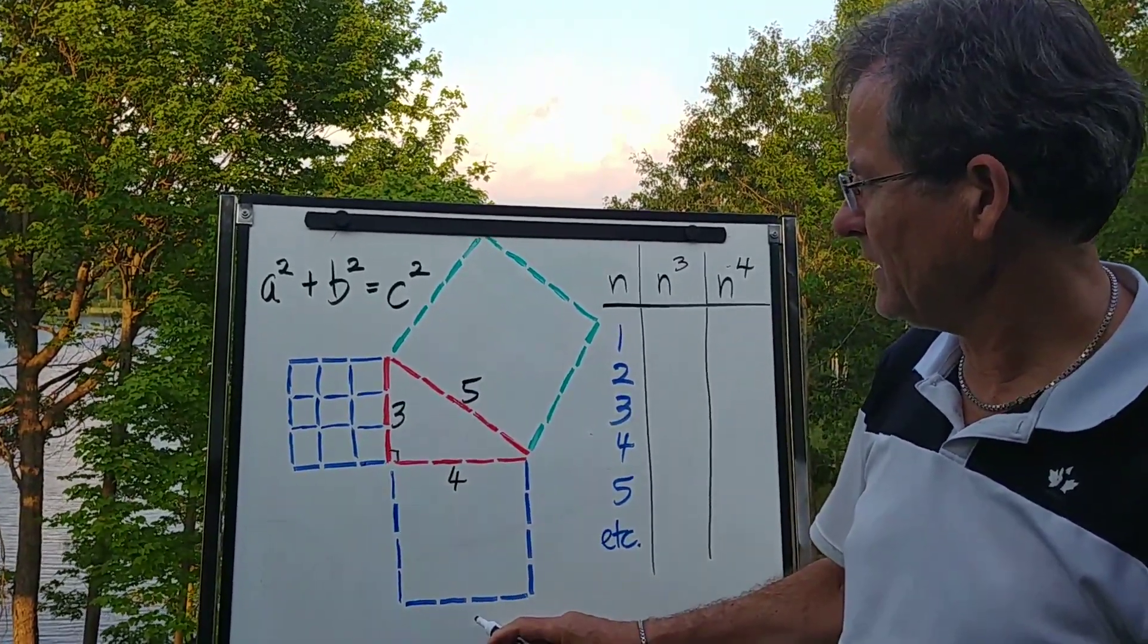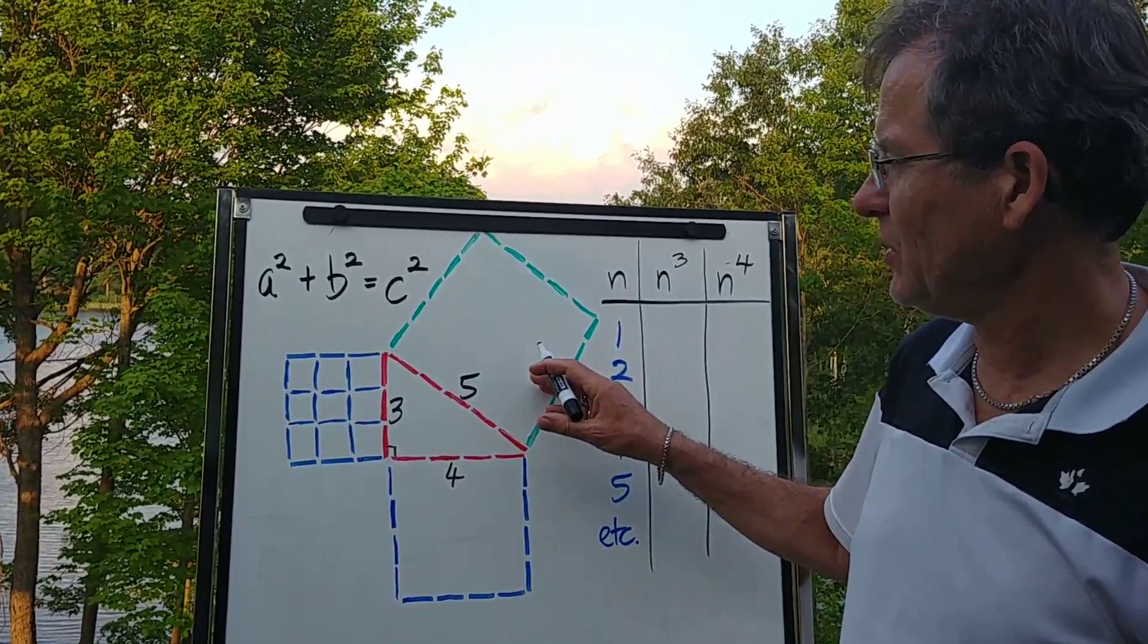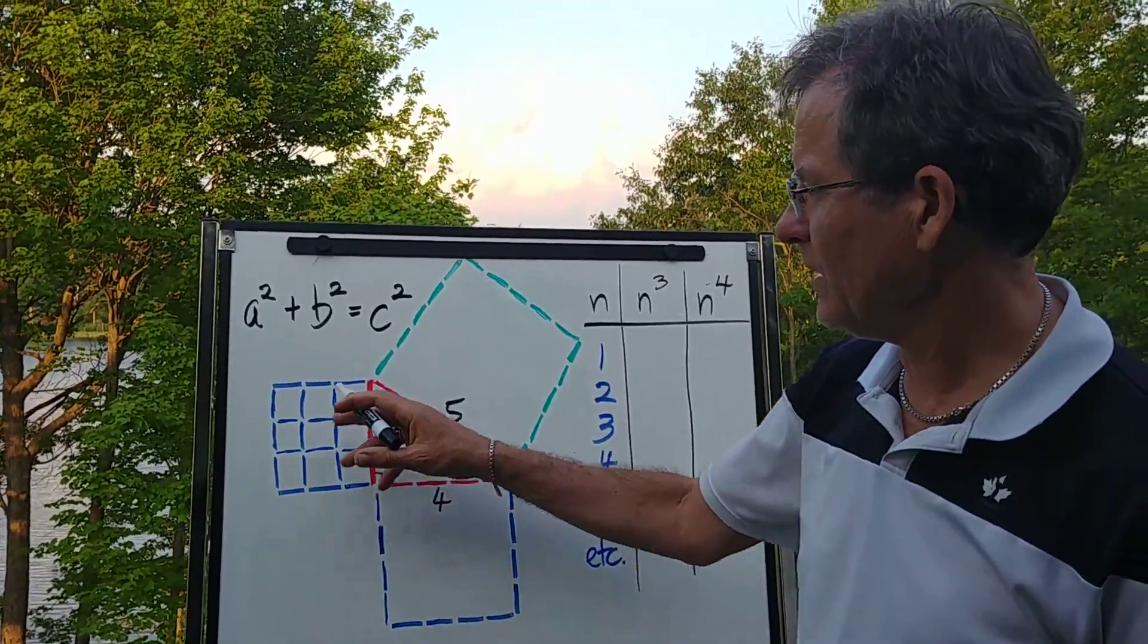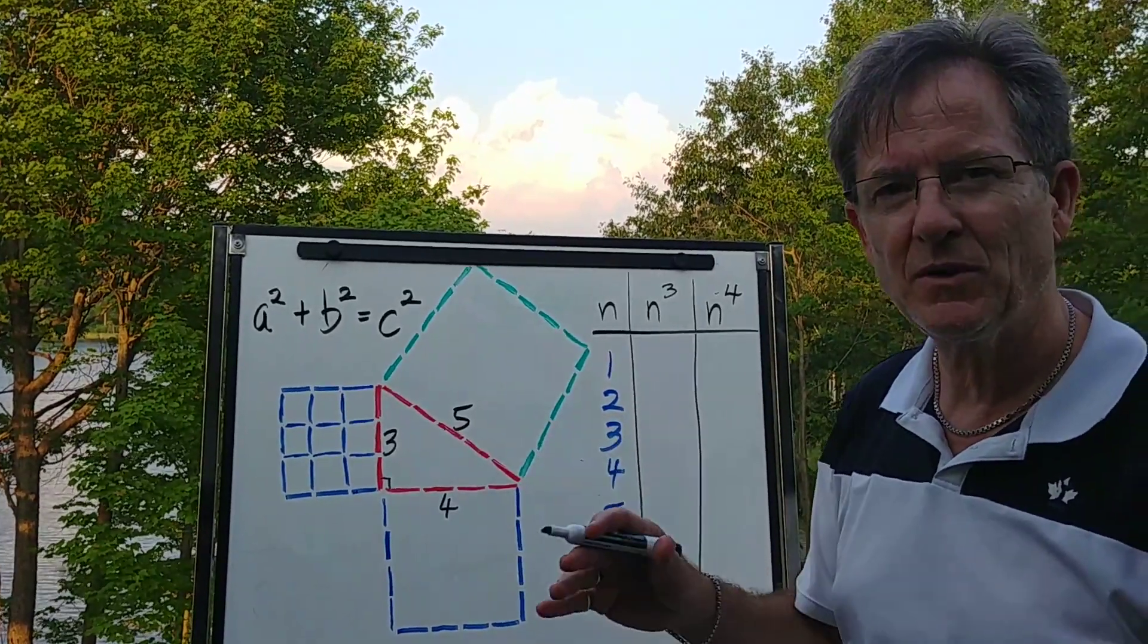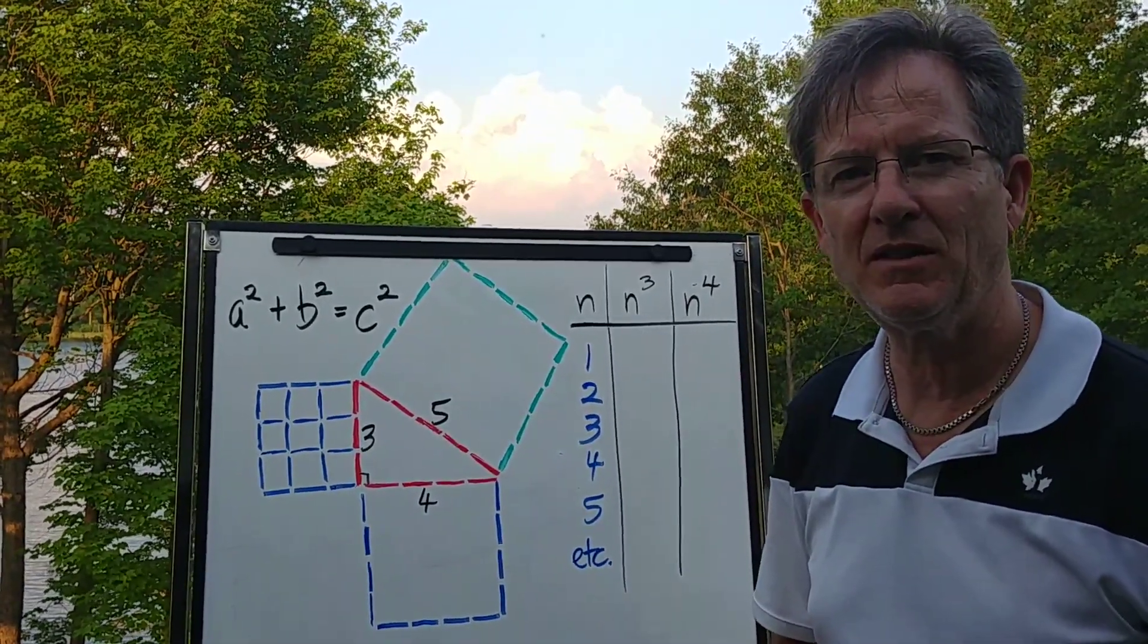You can imagine this one being filled in and this one being filled in, and it shows that 9 squares plus 16 make 25. So it's a good visual representation of the Pythagorean Theorem.